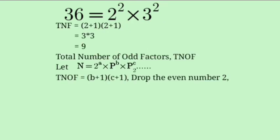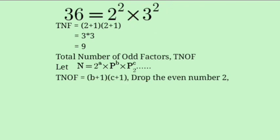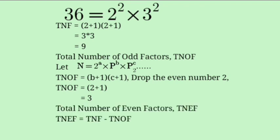To find the total number of odd factors, we drop the even prime number 2. We are left with only 3 raised to 2, so TNOF = 2 + 1 = 3.